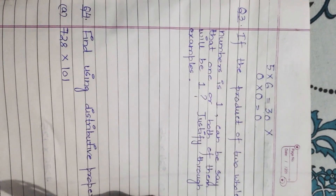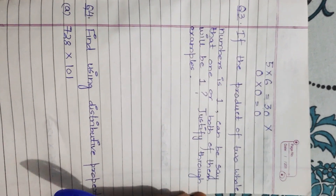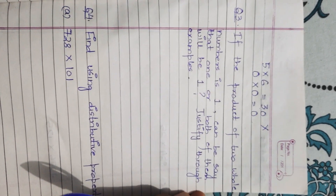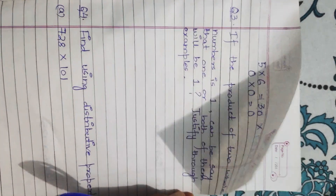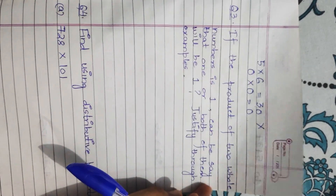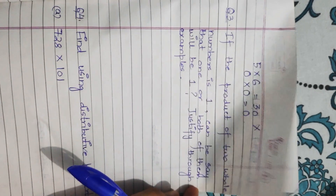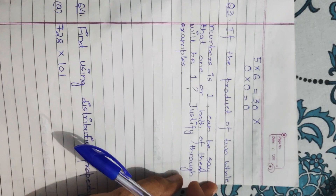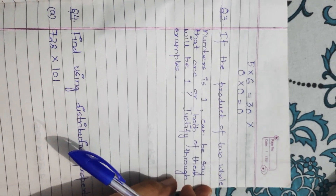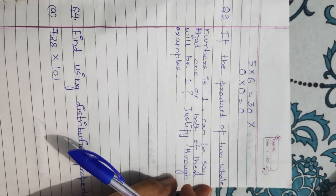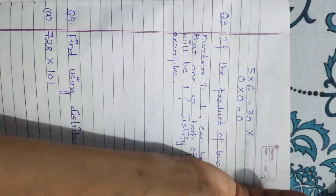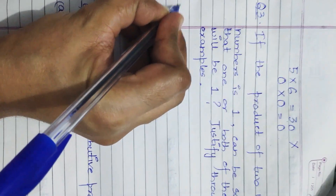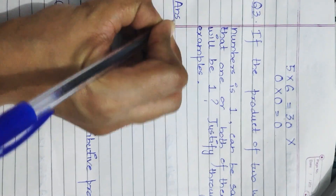Question 3: If the product of two whole numbers is 1, can we say that one or both of them will be 1? Justify through examples. We have to check that when we multiply two whole numbers and get 1, either one or both of them will be 1.